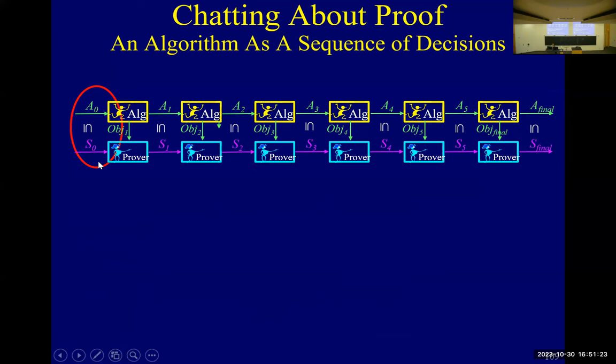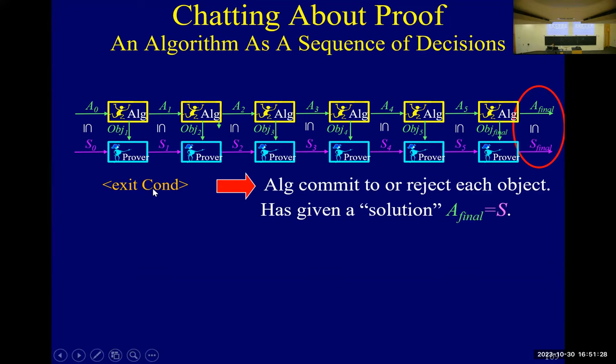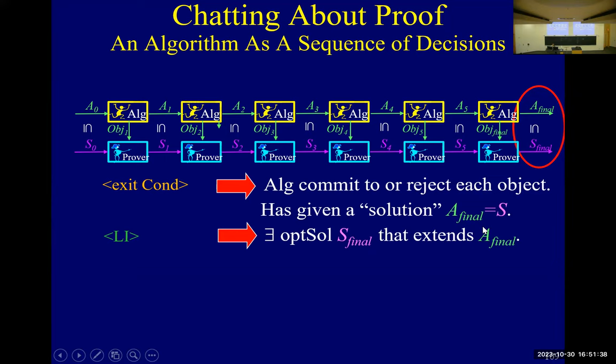At the end, we need to get the postcondition. The algorithm is committed to everything, so we have a full solution, and there exists an optimal solution consistent with it — namely, what the algorithm has.